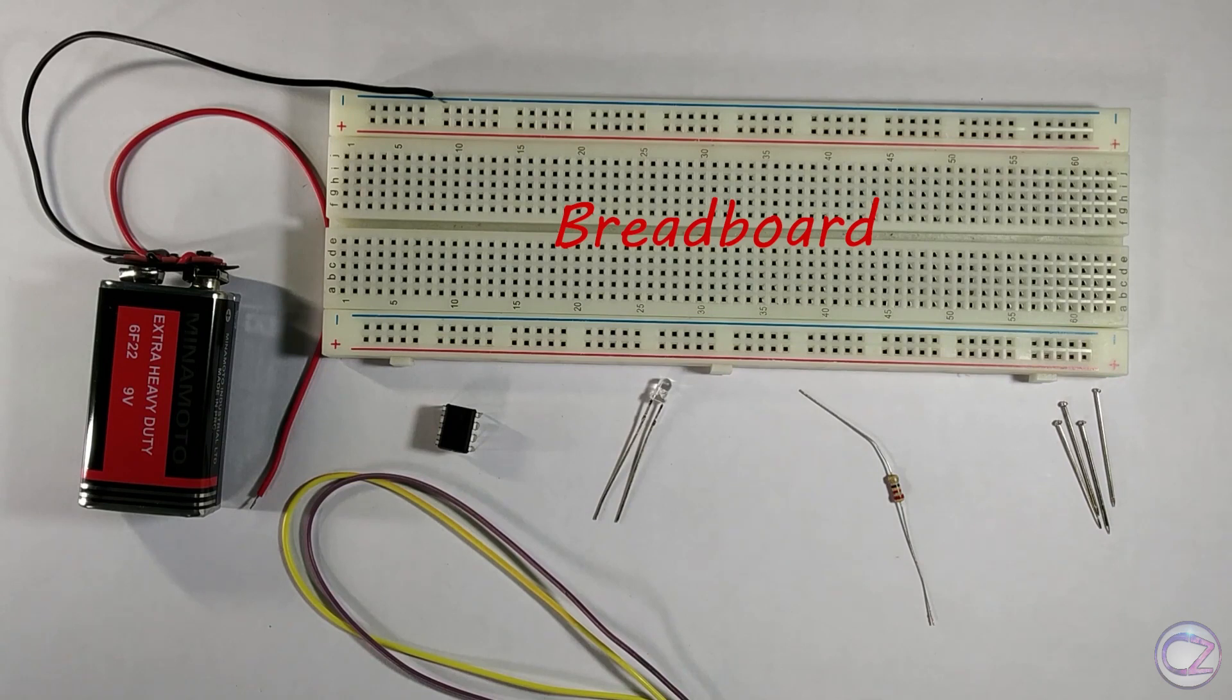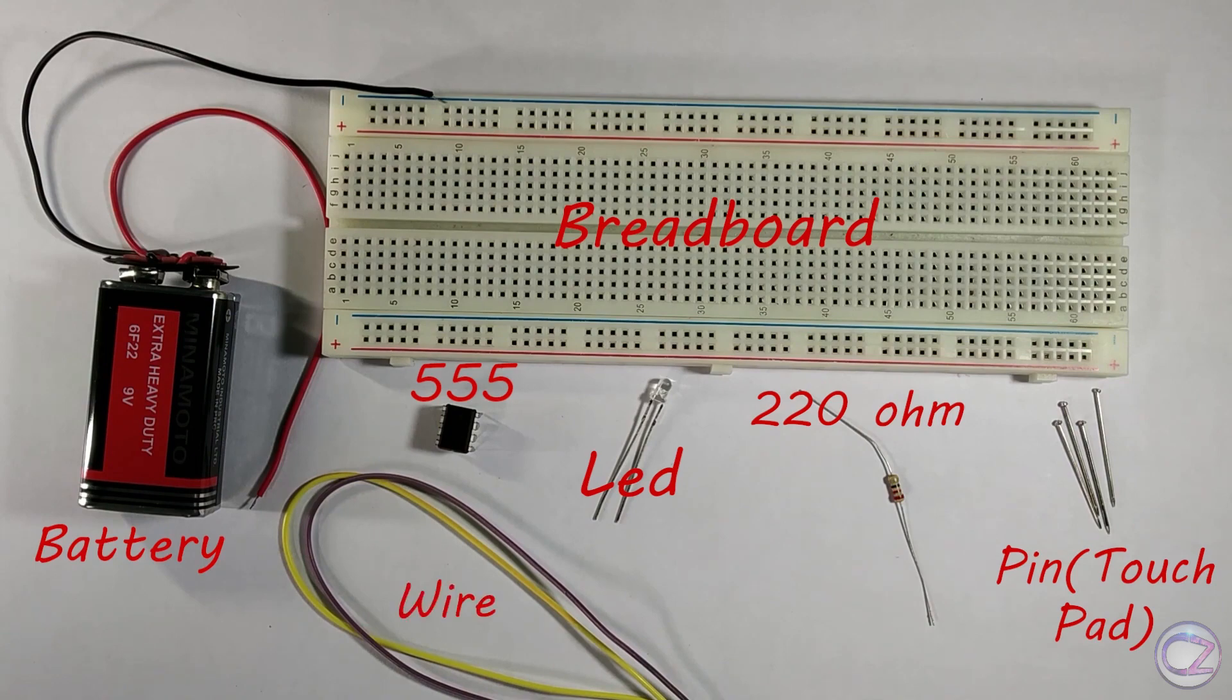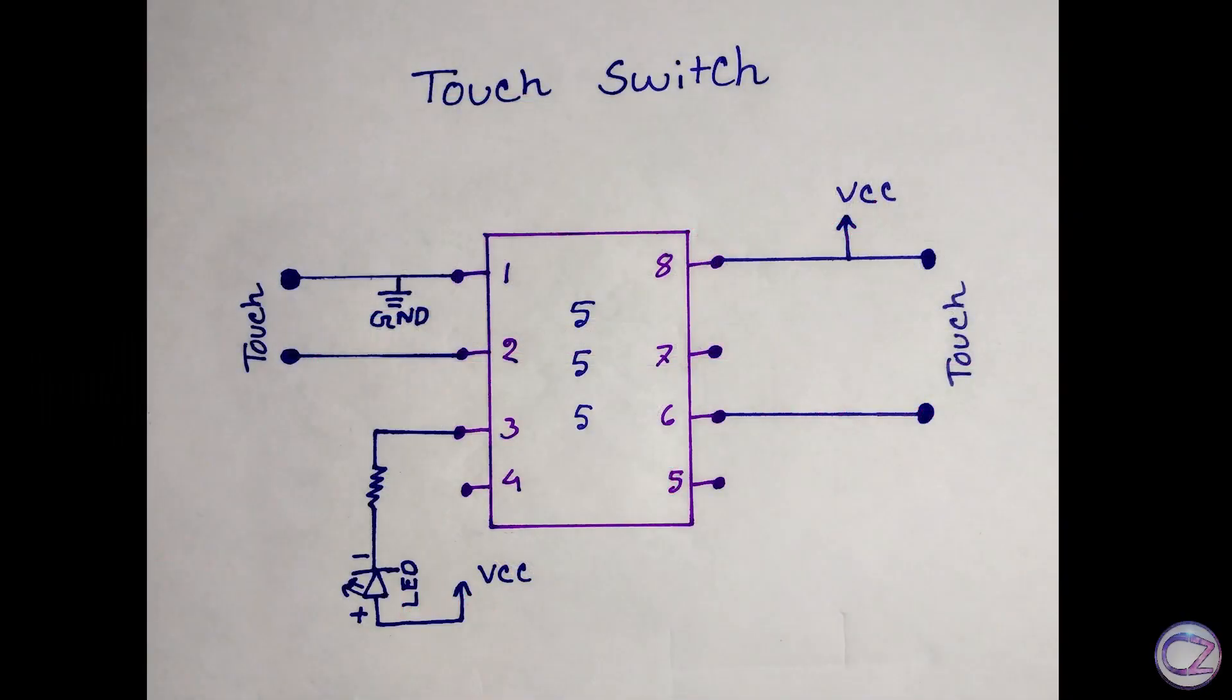To make this circuit you need a breadboard, 555 timer IC, LED, 220 ohm resistor, 9V battery, and connecting wire. Okay, look at this diagram. I will follow this diagram to make this circuit.